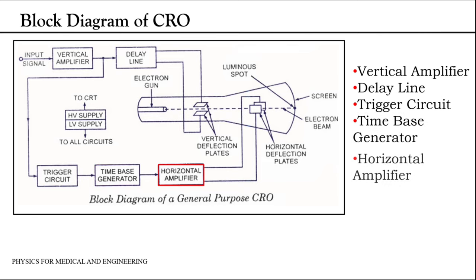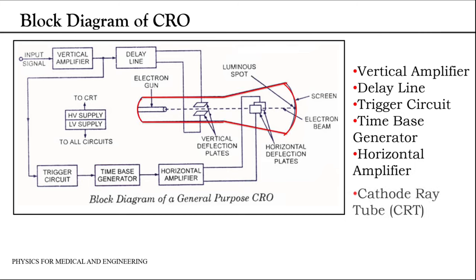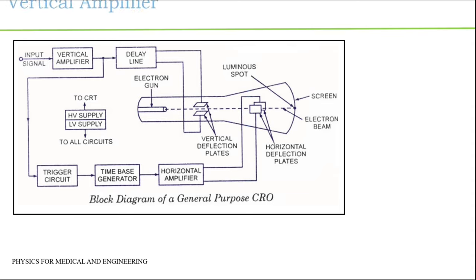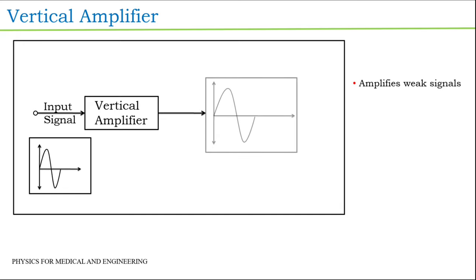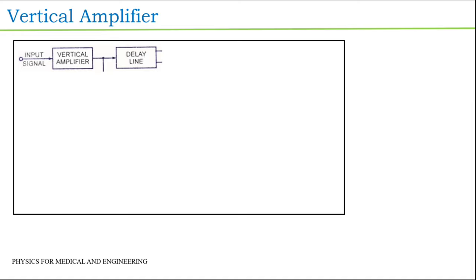The first block is a vertical amplifier. The input signal to be displayed on the screen of the CRO is applied to the vertical amplifier. This amplifier amplifies the weak signal so that they produce measurable deflection on the screen. Vertical amplifier decides the sensitivity and bandwidth of the CRO. Its output is given as input to the delay line block.